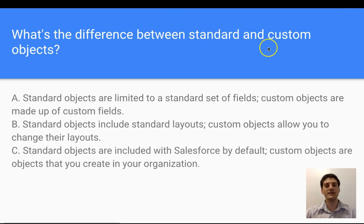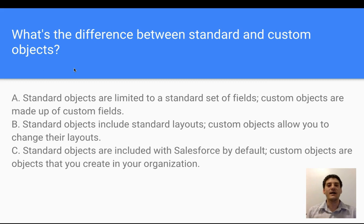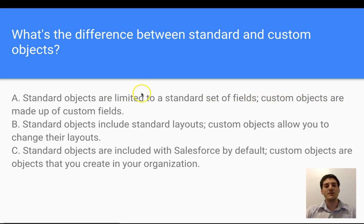What's the difference between Standard and Custom Objects? Standard objects are objects that come with Salesforce, with whatever edition or license you have. Custom is what we create — we customize. Standard Objects are limited to a standard set of fields, while Custom Objects are a map of custom fields. Standard Objects include standard layouts; Custom Objects allow you to change their layouts. Standard Objects are included with Salesforce by default; Custom Objects are objects that you can create in your organization.